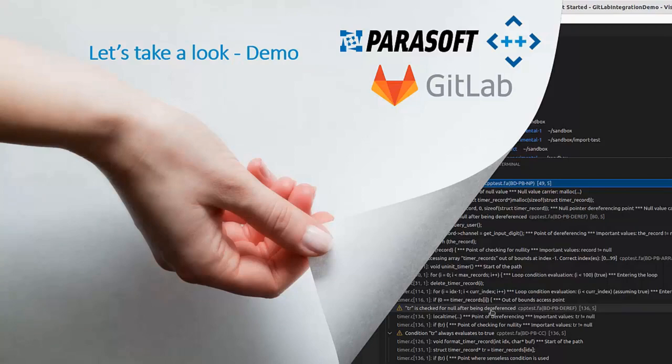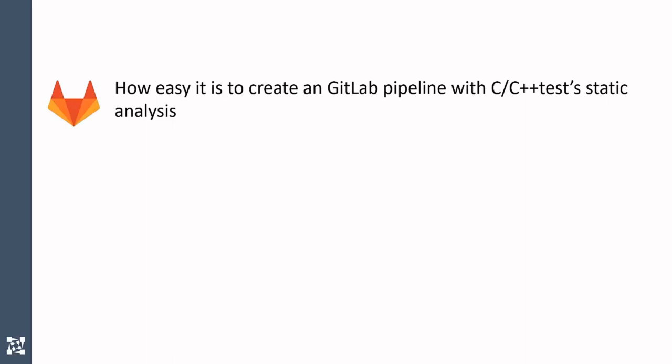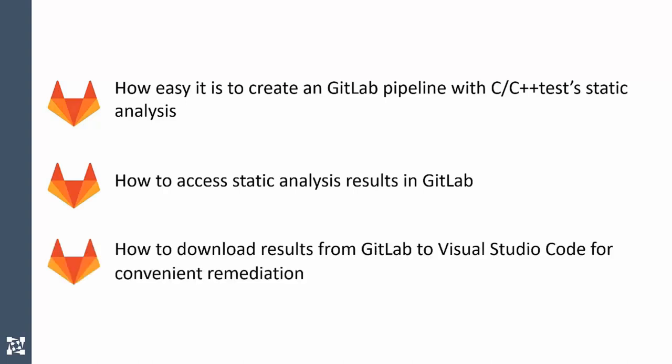Let's get to the demo and see DevOps continuous integration in action. In this video, I will demonstrate how Parasoft C++ test integrates into GitLab CI/CD pipelines. We're going to see how to create a GitLab pipeline with C++ test static analysis, how to access static analysis results in the GitLab interface, and how to download results from GitLab's pipeline to Visual Studio Code for convenient remediation.